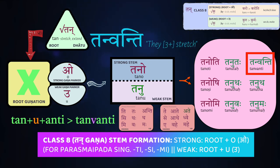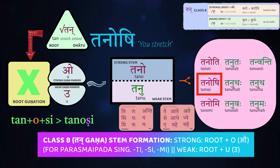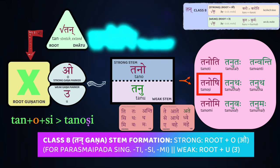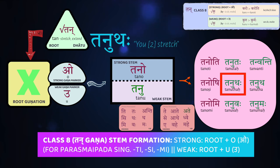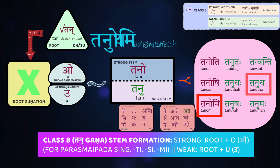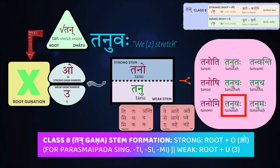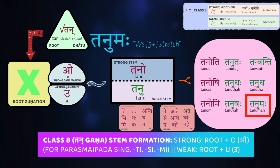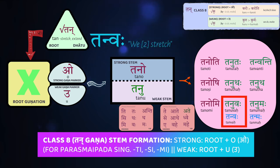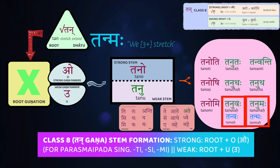Notice that our u in tanu turns into a va kara because of internal sandhi — tanuanti. For second person, again, we get the internal s sandhi rule triggered by our o kara, so we get tanoshi — you stretch. Tanutaha — the two of you stretch. And tanutaha — you three or more stretch. For the first person, the uttama purusha, we'll have tanomi — I stretch, using our strong stem tano. For the others, we use the weak stem tanu: tanuwaha — the two of us are stretching, or tanumaha — three or more of us are stretching. Optionally, we can also see tanuwaha or tanuwaha — the u kara can drop out in the uttama purusha duals and plurals, the dvivachana and bahuvachana. We saw this in the fifth class as well.